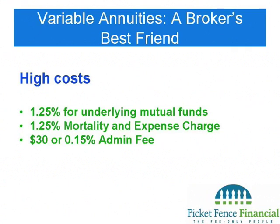The first reason to avoid variable annuities is the cost — they are egregious. There are typically three charges with every variable annuity. The first is for the underlying investment, usually a mutual fund, which runs about 1.25% per year. Then there's a mortality and expense charge that also runs about 1.25%. There's also an administration fee of about $30 or 0.15% per year. When you add it all up, you're looking at 2.5% or greater just to hold the variable annuity.